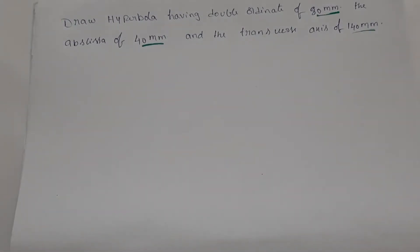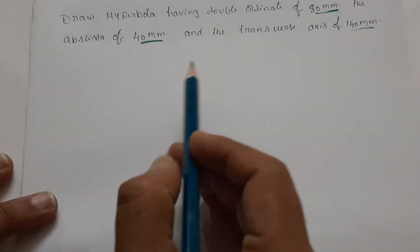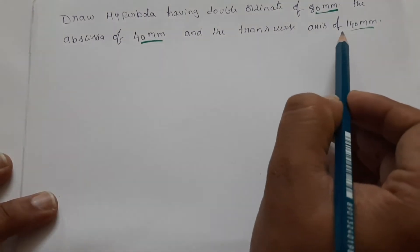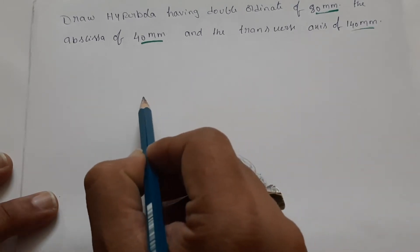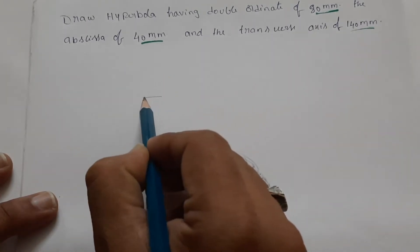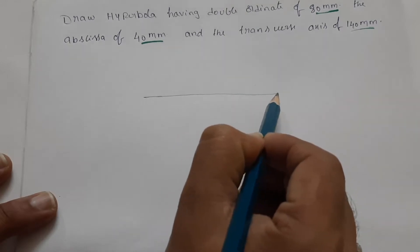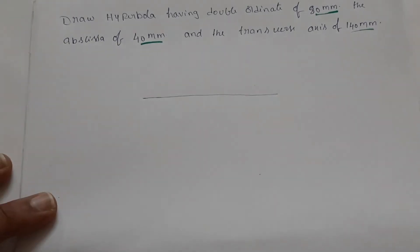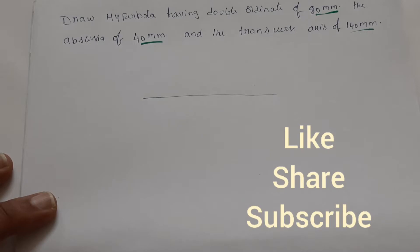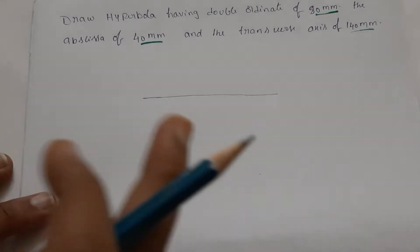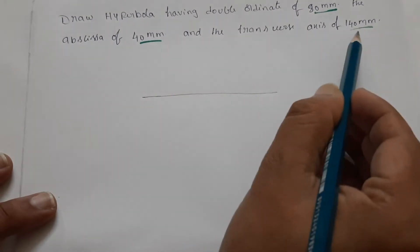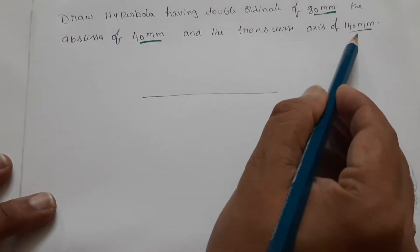First of all — transverse axis. Transverse axis is nothing but the major axis. We have already seen this in hyperbola by arcs of circles method. Transverse axis is the major axis, but in hyperbola it is called the transverse axis. So the transverse axis is 140 mm.